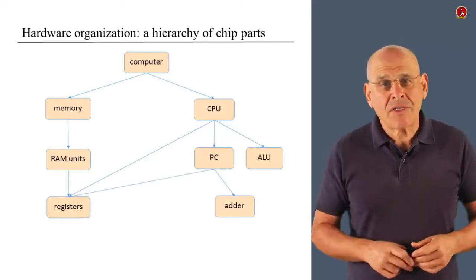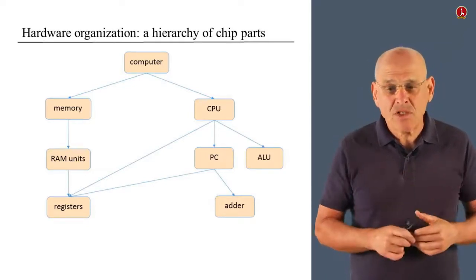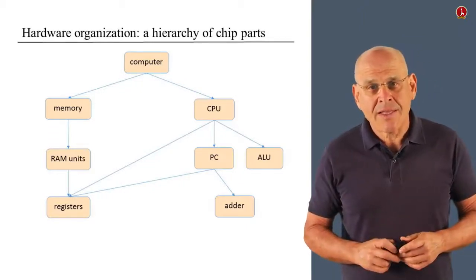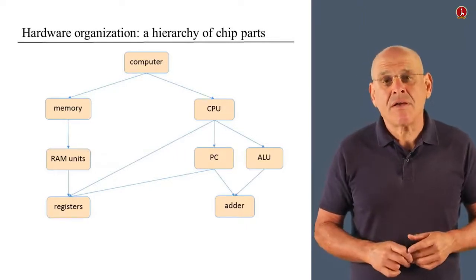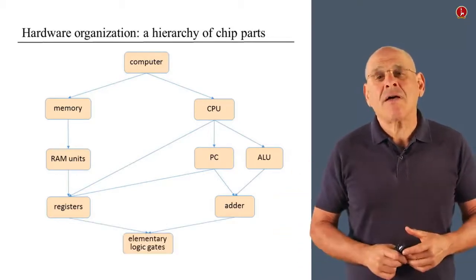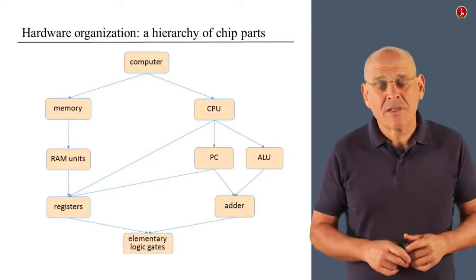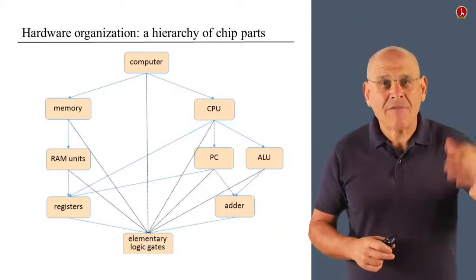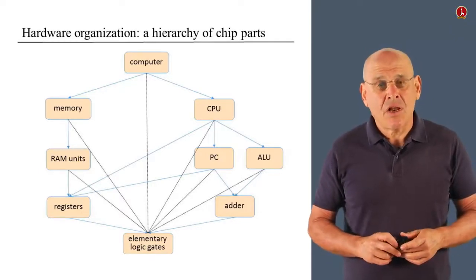We can continue to resolve these chip parts into simpler or more basic chip parts. For example, the program counter makes use of a register and an adder. And the ALU also makes use of another instance of an adder chip. And, of course, all these chips at the end of the story are based on elementary logic gates. Those that you built in the first week of the course. And also other chips, higher level chips, make direct use every once in a while of these lower level gates.